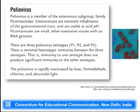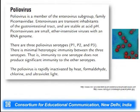The polio virus is a member of the enterovirus subgroup and the Picornaviridae family. Enteroviruses are transient inhabitants of the gastrointestinal tract and are stable at acidic pH. They have an RNA genome. There are three polio virus serotypes: P1, P2, and P3, with minimal heterotypic immunity — meaning one serotype does not produce significant immunity to the other serotypes. These polio viruses are rapidly inactivated by heat, formaldehyde, chlorine, and ultraviolet light.